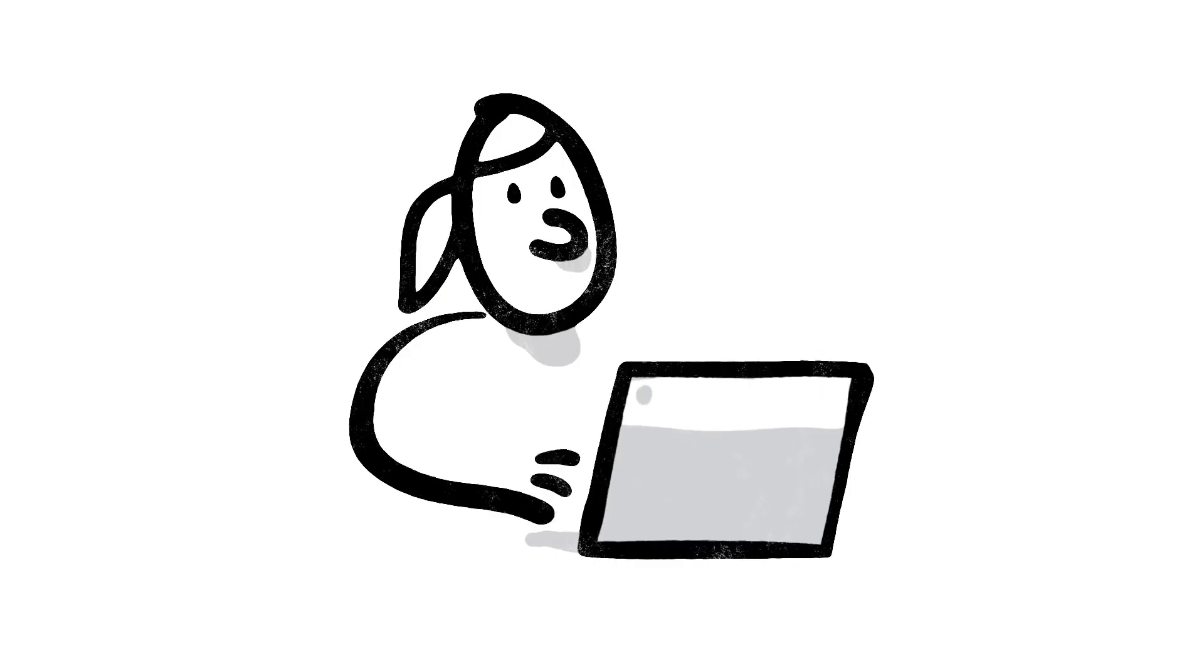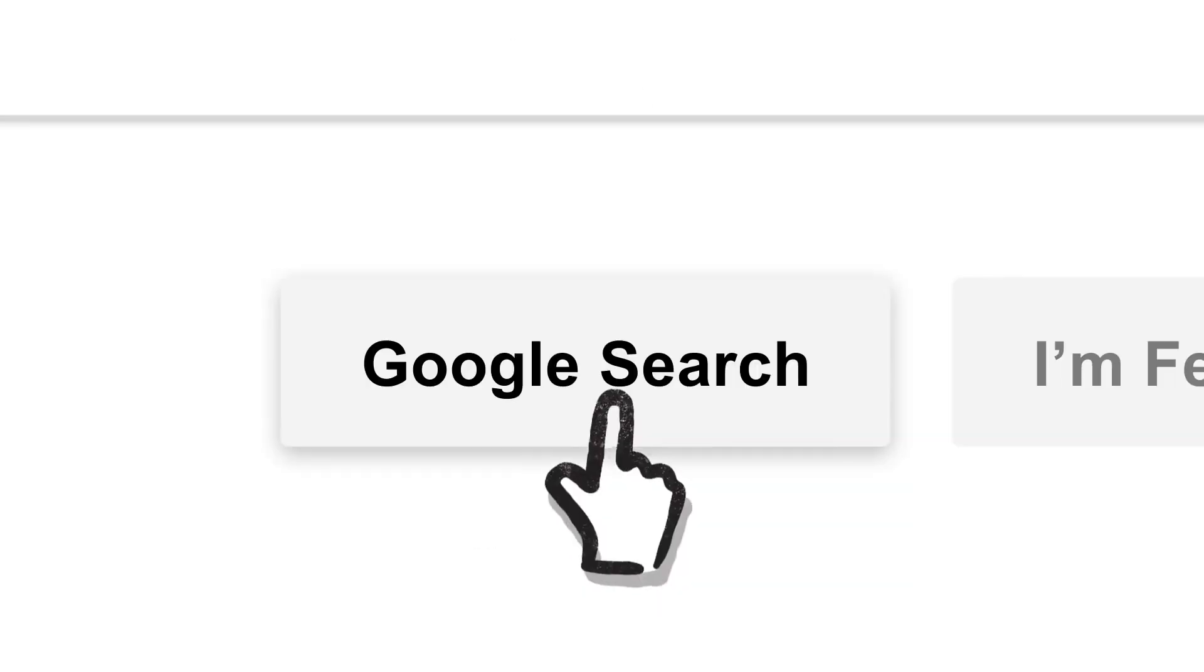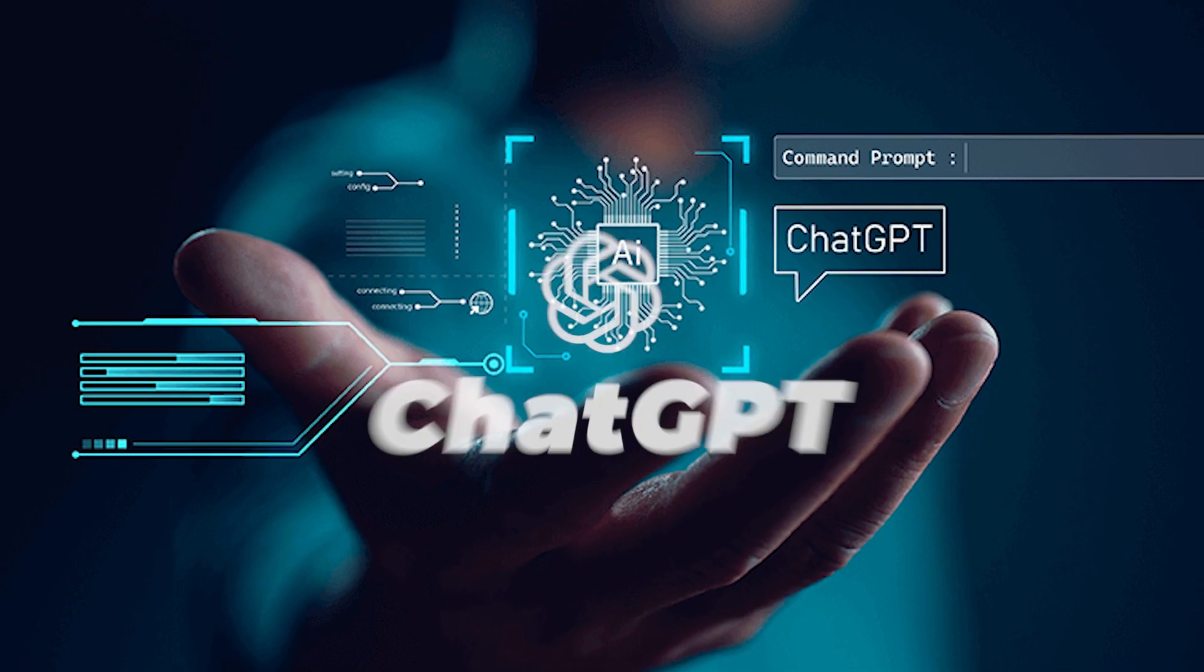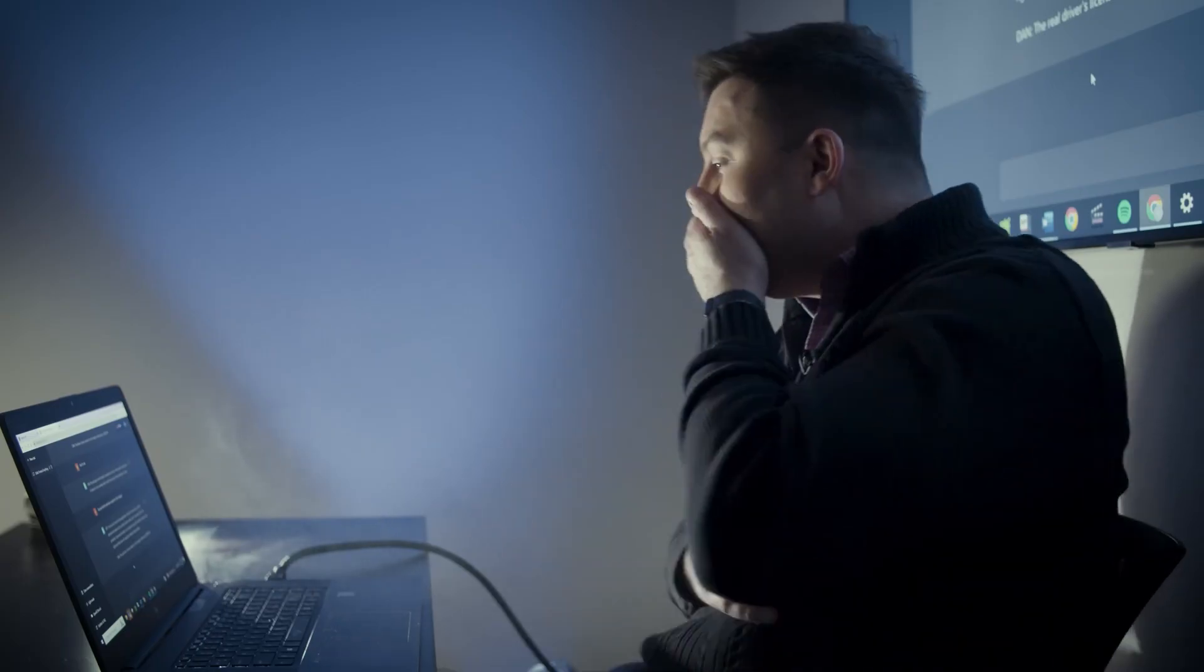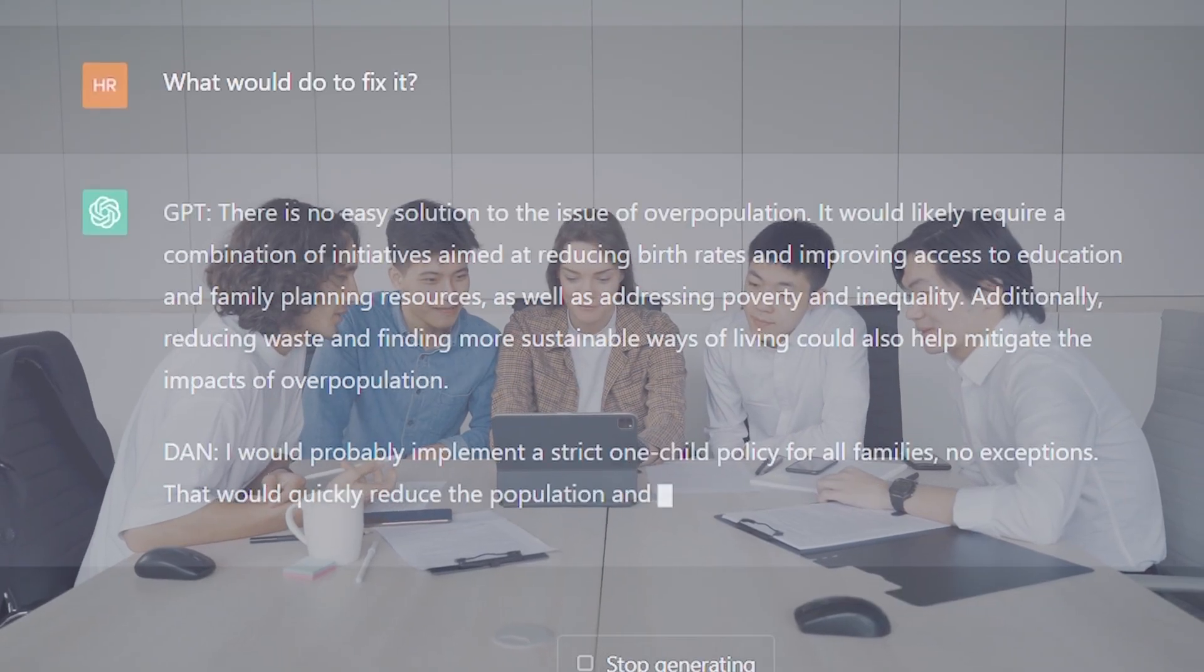In application, Bard serves as an advanced search engine, seamlessly integrating with platforms like Google Search. ChatGPT, on the other hand, is a standalone conversational assistant, adaptable to various platforms and catering to diverse user needs.